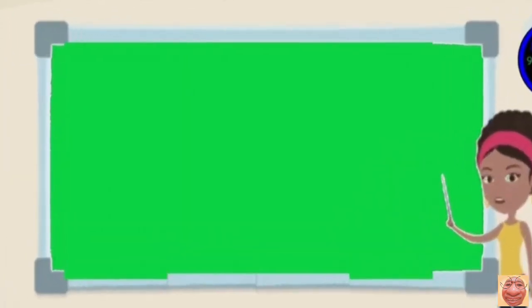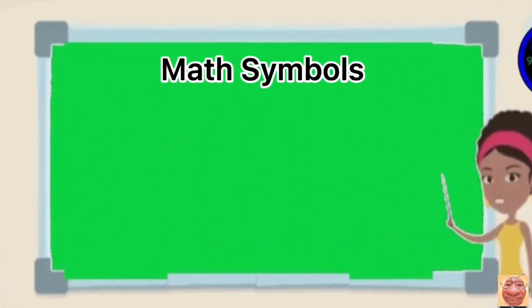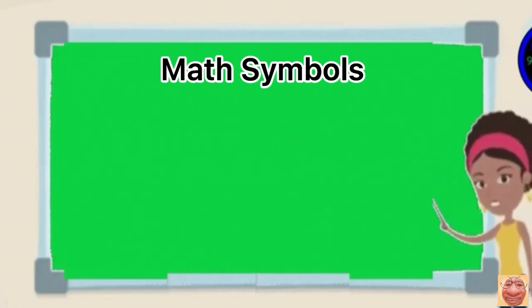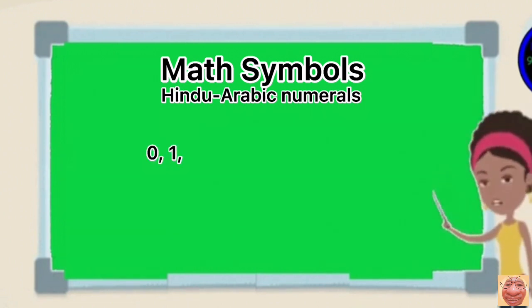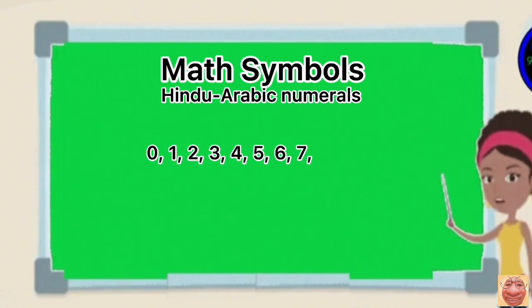Now, let's take a look at the example of math symbols. The commonly used symbols in mathematics are Hindu Arabic numerals, the 0, 1, 2, 3, 4, 5, 6, 7, 8, and 9.